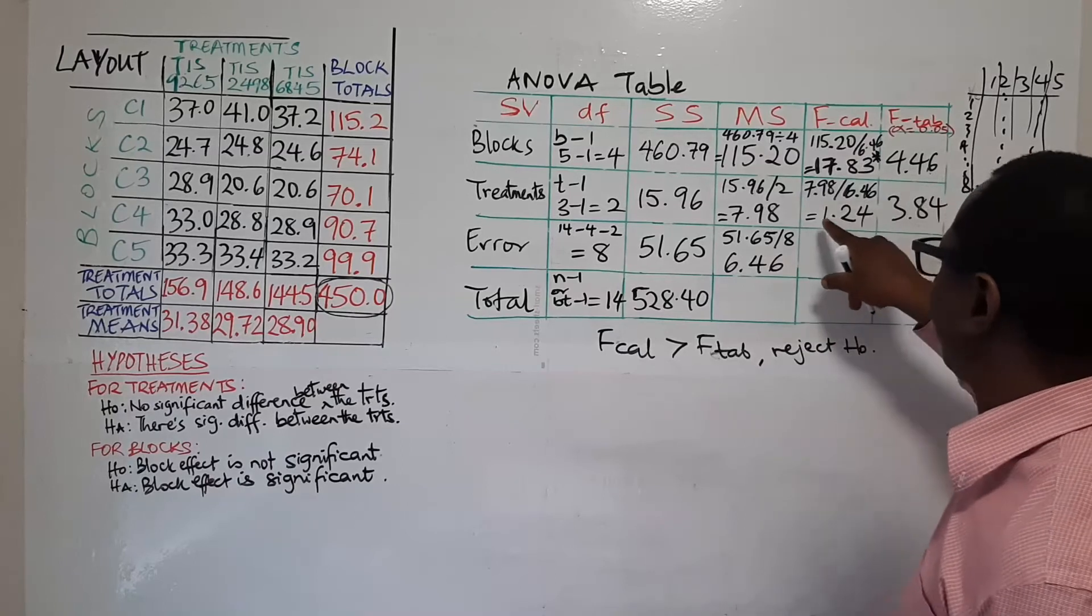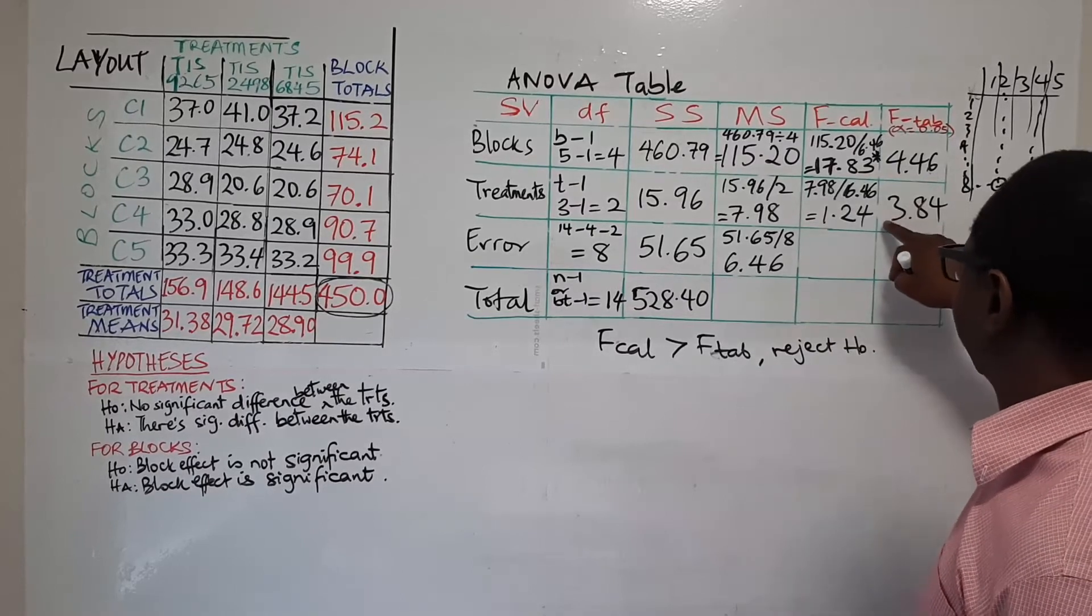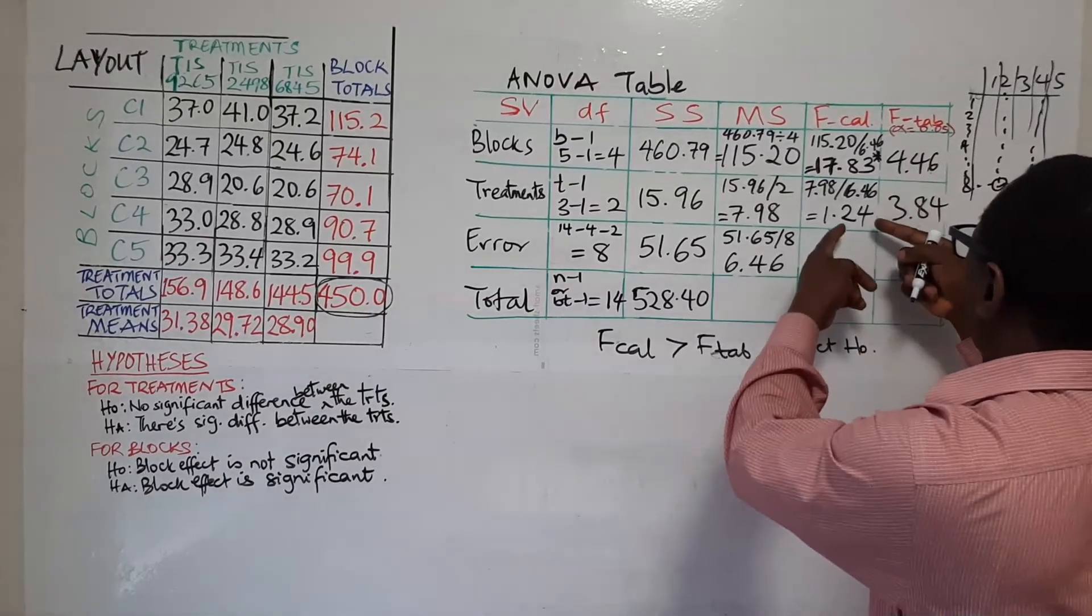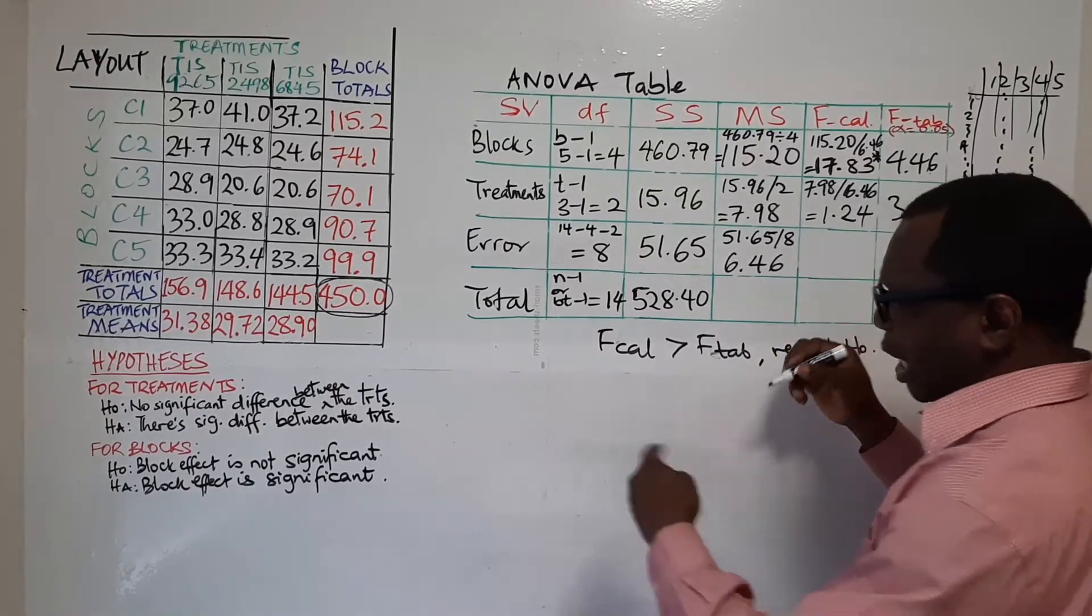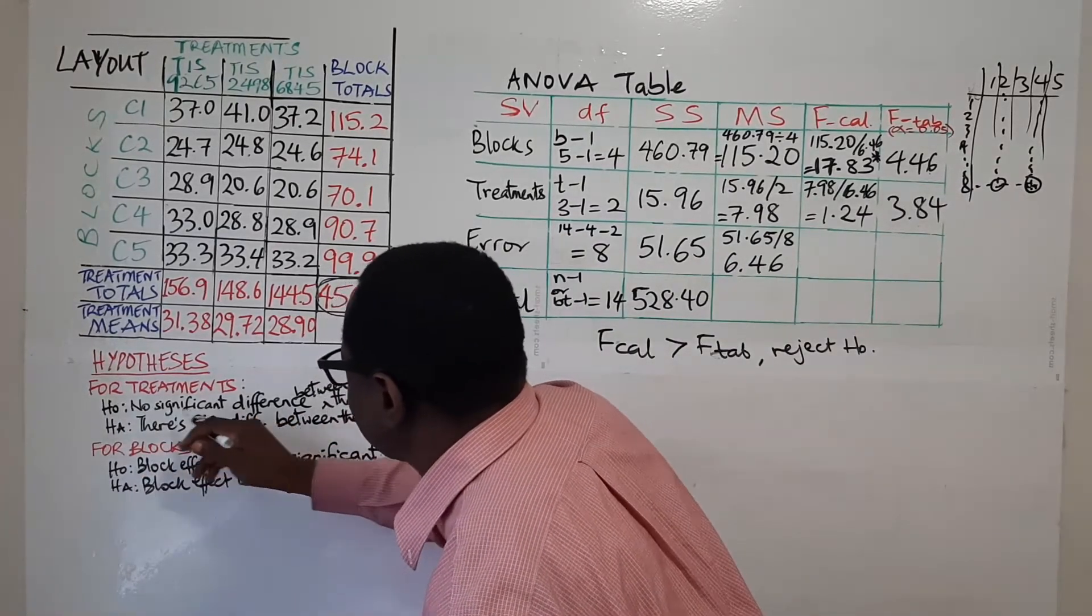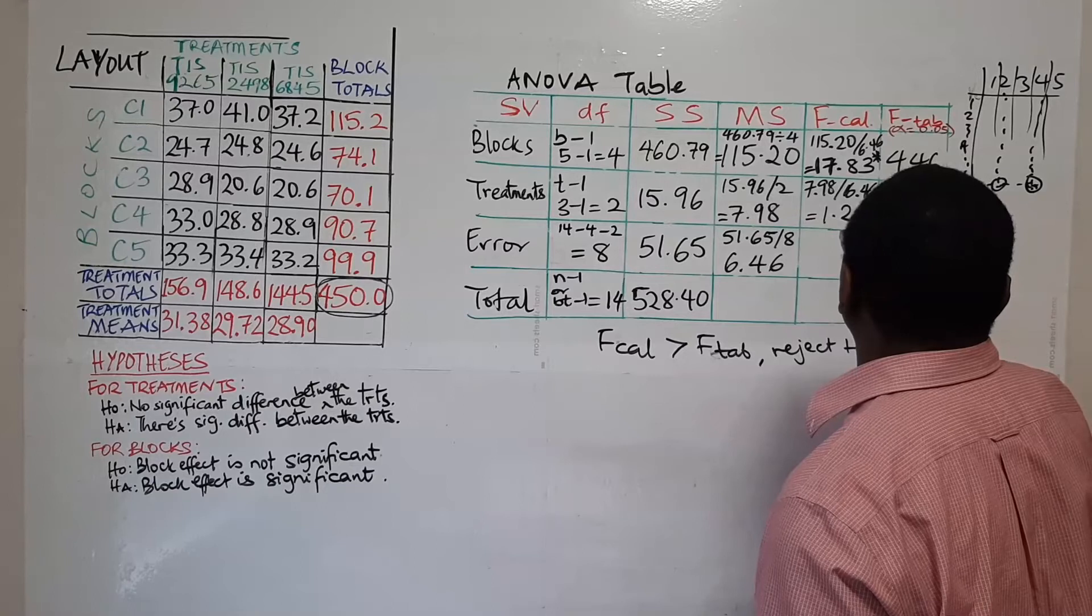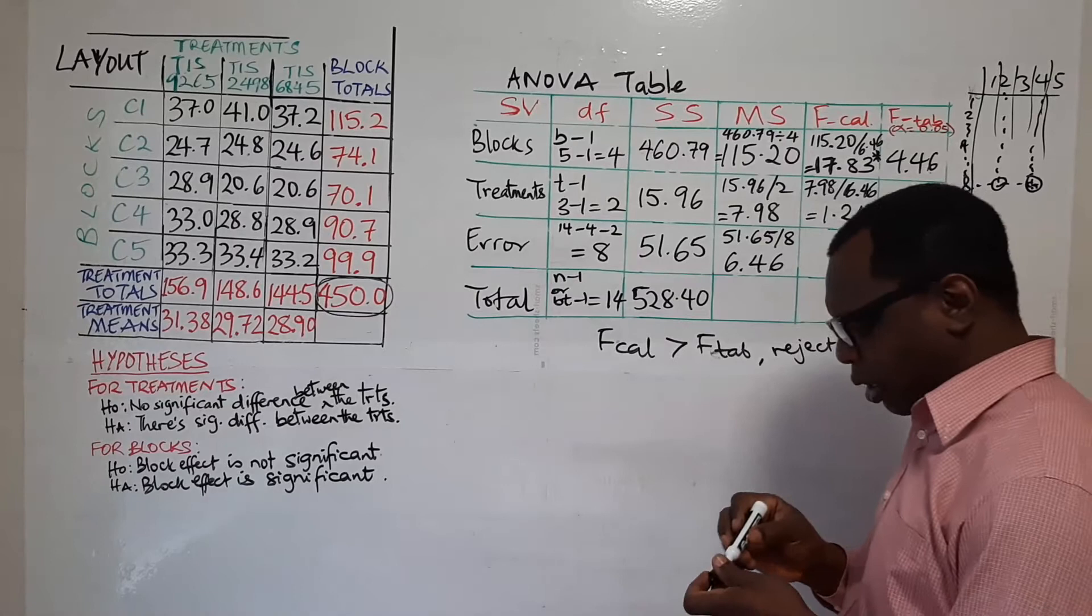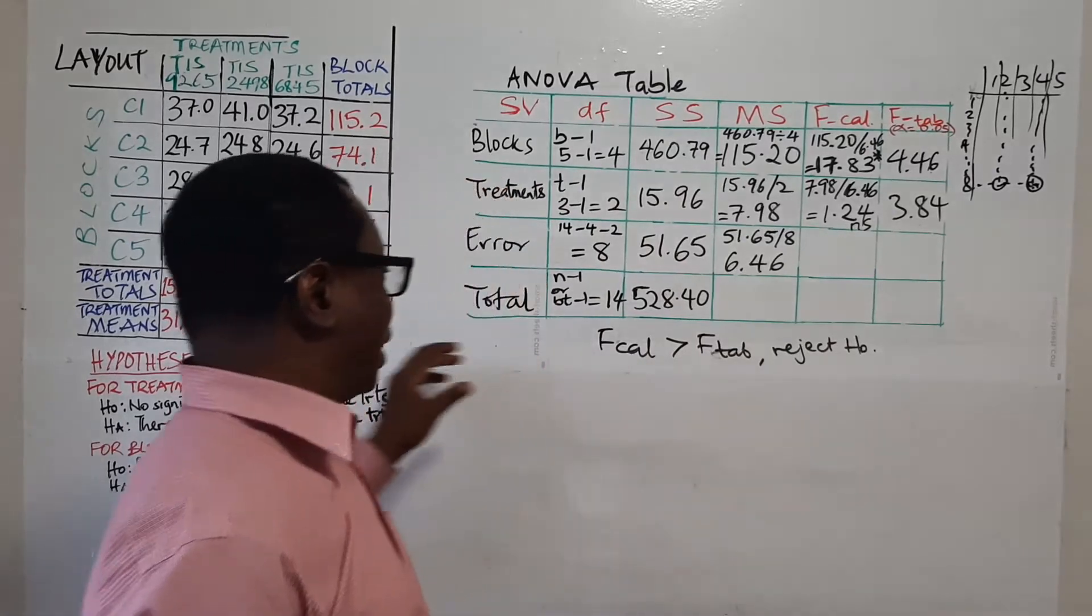Let's check the second one for treatments. 1.24 versus 3.84. So we say this is not significant. Why? Because the calculated value is less than the tabulated value. And that means we accept null hypothesis in that case. And what does our null hypothesis say for treatment? It says no significant difference between the treatments. So this value here is not significant. So we can put N-S there. So that is how we complete our computation and take decisions regarding our hypothesis.